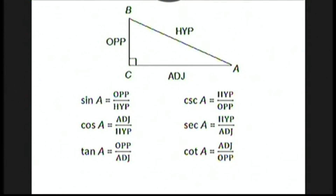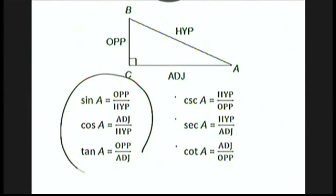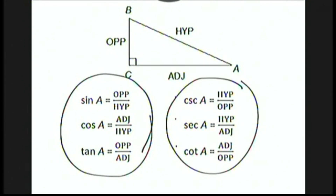We have the six basic trigonometric functions. Sine A is opposite over hypotenuse. Cosine A is adjacent over hypotenuse. Tan A is opposite over adjacent. And then the three reciprocals: the reciprocal of sine is cosecant, the reciprocal of cosine is secant, and the reciprocal of tangent is cotangent. These three are the most important — if you're pretty good with those, you're in good shape. More advanced students might want to know the reciprocal functions as well.